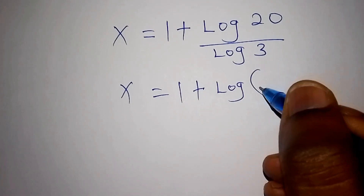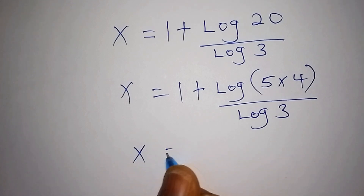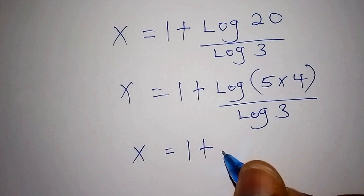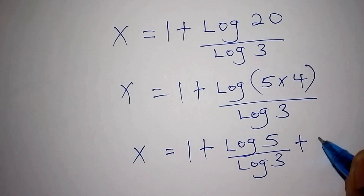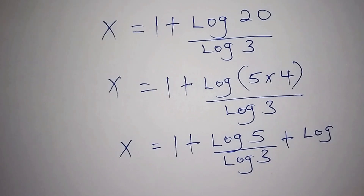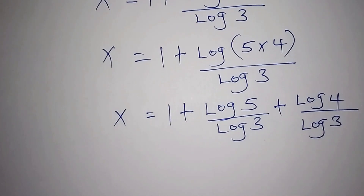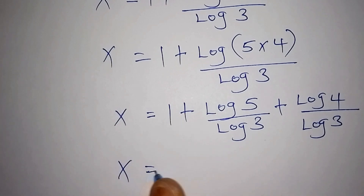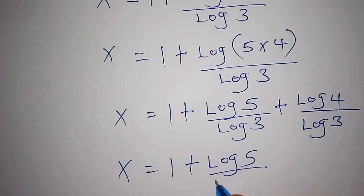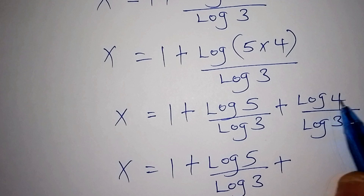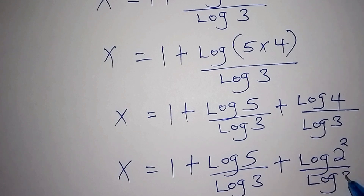Splitting the log of 5 times 4, x equals 1 plus log 5 over log 3 plus log 4 over log 3. We can rewrite log 4 as log of 2 to the power of 2, so x equals 1 plus log 5 over log 3 plus log(2²) over log 3.